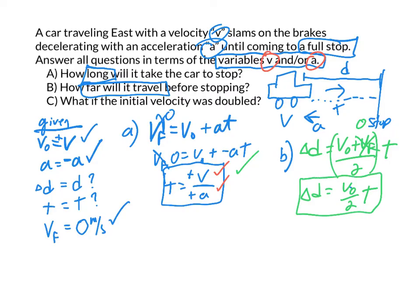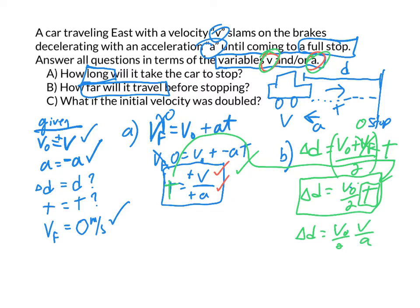The issue is they want your answer in terms of v or a, and while we have v, we also have t. So if this happens, you're not out of luck — we've already solved for time, so just substitute it in. Delta d equals v over 2, multiplied by the time we found, which is v over a. That gives you delta d equals v squared over 2a. That's the solution.